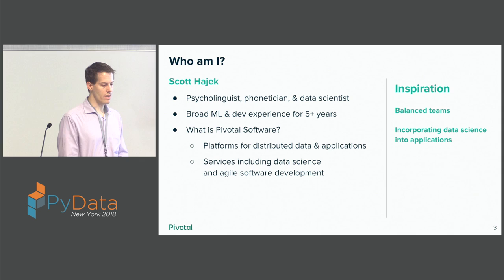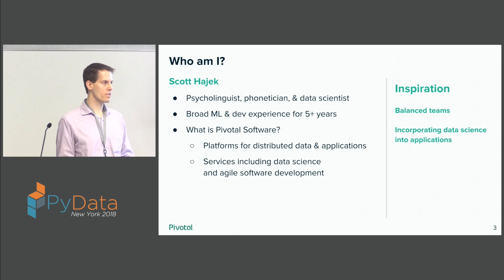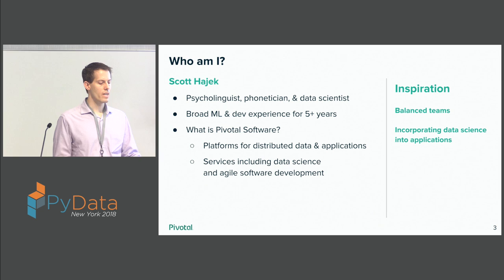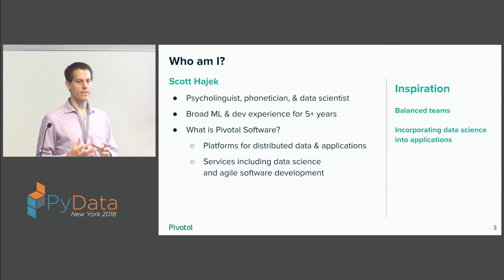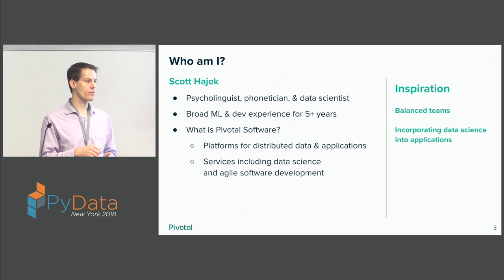I work for Pivotal Software, which if you're not familiar with it, they have both products and services. Their products include platforms for distributed data and applications. If you've heard of Cloud Foundry as an application platform, or Greenplum Database as a distributed data platform, those are examples. On the services side, we have data science and agile software development, and a lot of times engagements might be just data science or just agile software development and can be very quick — we go in and do some great stuff in short amounts of time, like three months or so.